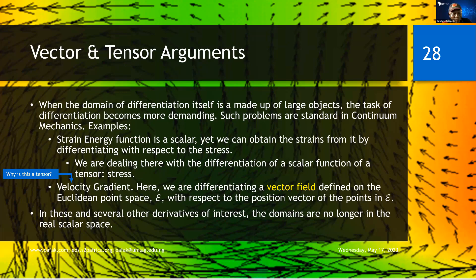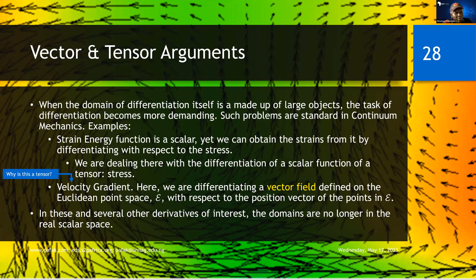When the domain of differentiation itself is made up of large objects, the task of differentiation becomes more demanding. Such products are standard in continuum mechanics. For example, the strain energy function is a scalar, yet we can obtain stresses — which are tensors — from it by differentiating it with respect to stress. If we differentiate the strain energy function with respect to another tensor, it is a scalar differentiated with respect to a tensor, and the answer is a tensor. So we are dealing with differentiation of scalar functions of a tensor.